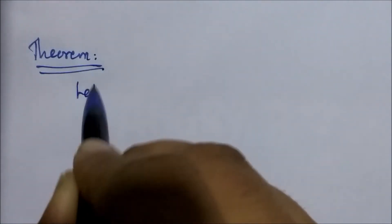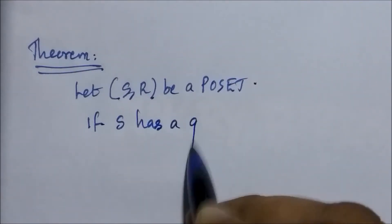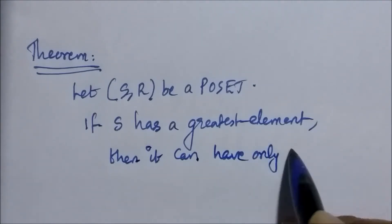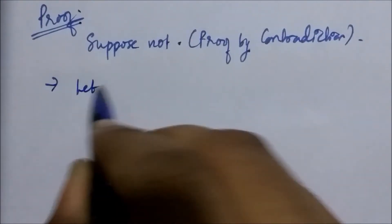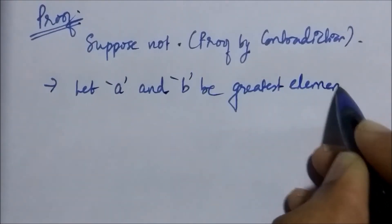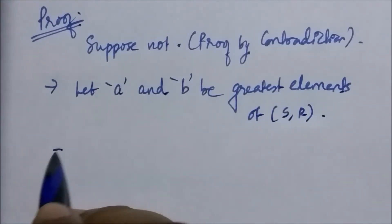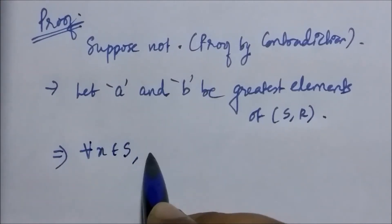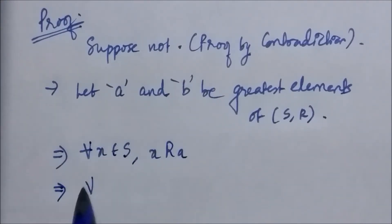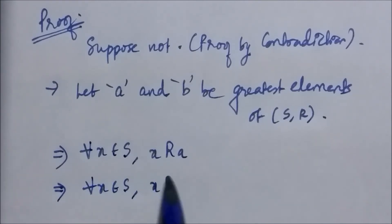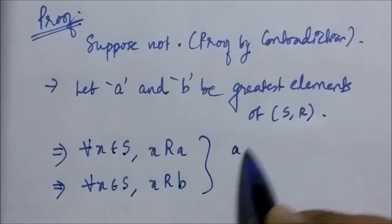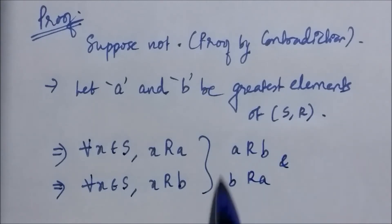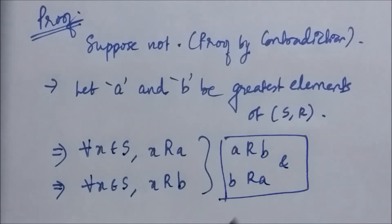Let's prove that the greatest element is unique. The theorem says: let (S, R) be a poset; if S has a greatest element then it can have only one. We prove by contradiction — suppose there are two greatest elements a and b. From the definition, since a is the greatest element, x is related to a for all x in S. Since b is also the greatest element, x is related to b for all x in S. From these two statements we get that a is related to b and b is related to a.